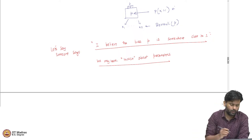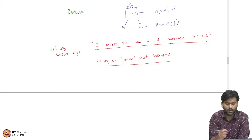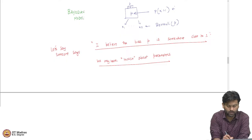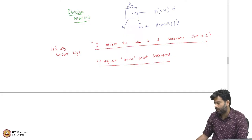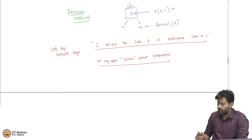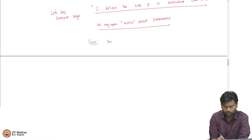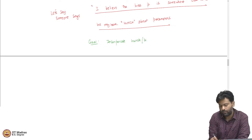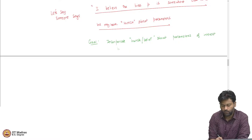This will take us to what is known as a Bayesian modeling approach. For people who have seen this, it might be a recap; otherwise, this can be thought of as a primer in Bayesian modeling. The goal is to incorporate these hunches that we might have — specifically, our belief about the parameters of interest — into the estimation procedure.